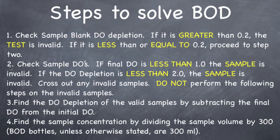Step 2: check your sample DOs. If the final DO is less than 1, the sample is invalid — not the test, just the sample. If DO depletion is less than 2, the sample is invalid. The final DO must be greater than or equal to 1, and it must deplete by at least 2. If you don't meet any of these criteria for that individual sample, the sample is invalid. Do this for all of the samples they give you, then cross out any invalid samples. Do not perform the following steps on invalid samples.